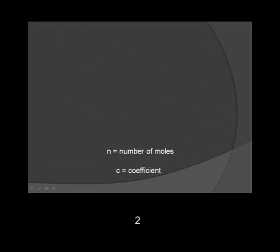In other words, the moles of substance 1, N1, over the moles of substance 2, N2, is equal to the coefficient of substance 1, C1, over the coefficient of substance 2, C2.